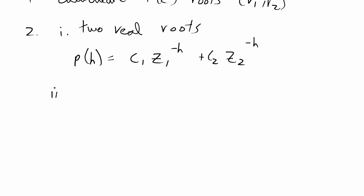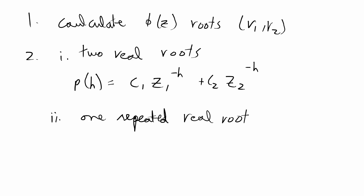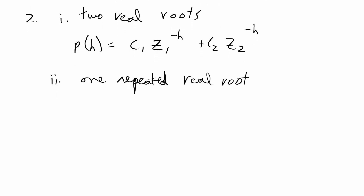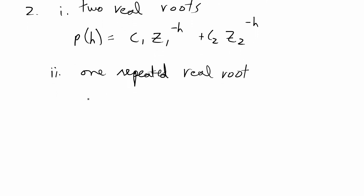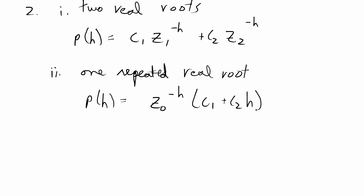The second possible case is if you have one repeated real root — when R1 equals R2. In that case the formula is z0 to the negative h times the quantity c1 plus c2 times h.